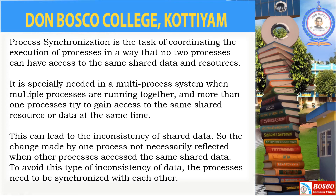If we do not coordinate the processes, all the processes may enter into deadlock — that is, the same resources are available and multiple processes attempt to access the data simultaneously. So we use process synchronization. Also, when cooperating processes share data, that may lead to inconsistency of data — one process will be updating the data while another requires the data that already existed in the system. We use process synchronization to avoid this inconsistency of data.